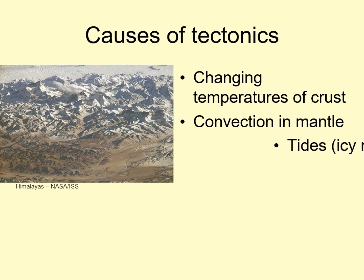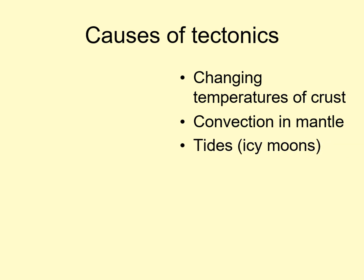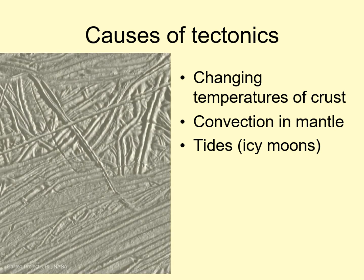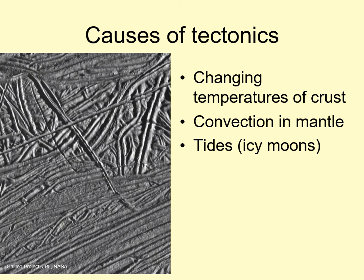Finally, a third way to generate tectonics is through tides. The repeated flexing and squeezing associated with tides on a moon can generate heat. These same stresses can cause repeated parallel ridges and valleys, making a pattern we see on several outer solar system moons, such as Jupiter's Europa.